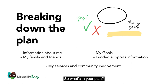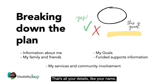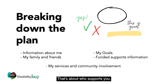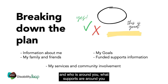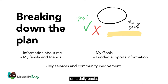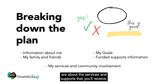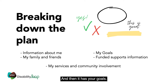So what's in your plan? Information about me — that's all your details like your name, address, and birth date. My Family and Friends is about who supports you and what supports are around you on a daily basis. My Services and Community Involvement covers the services and supports that you'll receive.